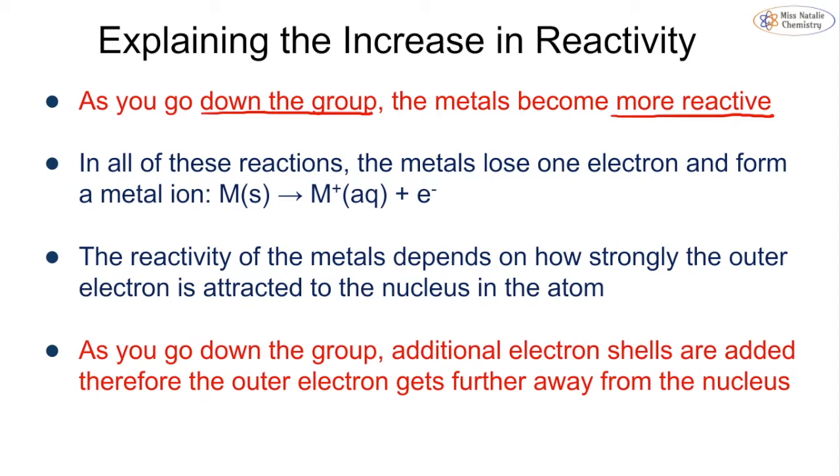And in order for these reactions to happen, all of these metals lose one electron, and they all form a metal ion. That is the point in this reaction. So when it reacts with acid or with oxygen or with water, in each of these, the metal loses one electron and it forms an ion. So the reactivity of the metal is going to depend on how strongly that outer electron is attracted to the nucleus.